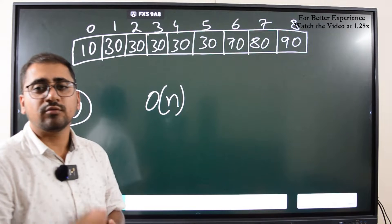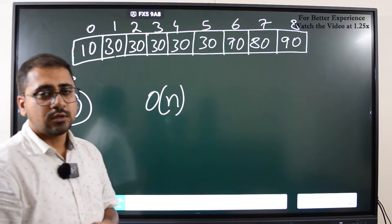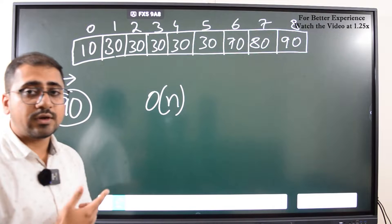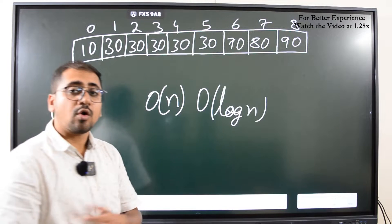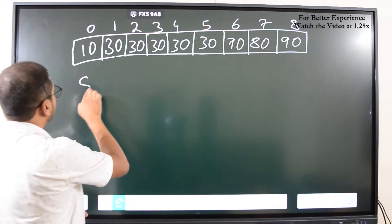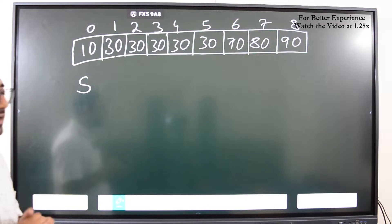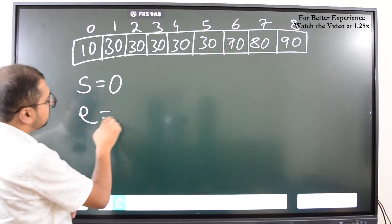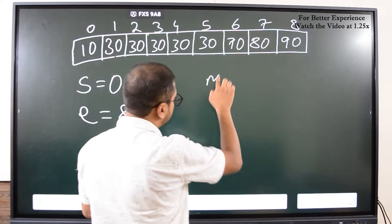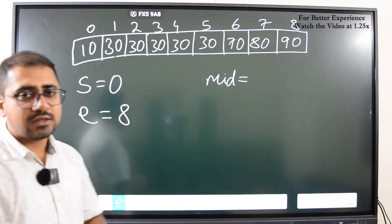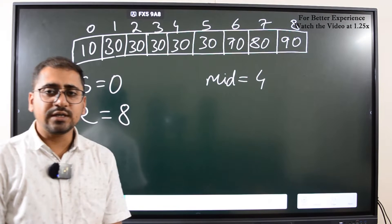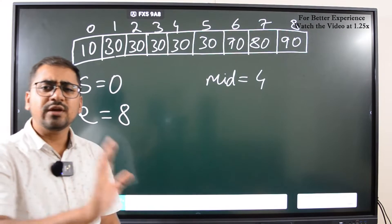Can we do it in a better way with fewer operations? Yes — using binary search, the time complexity reduces to O(log n). So how do we apply binary search here? We have a start index initialized to 0 and an end index at 8. We find the mid element: (0+8)/2 = 4. We check the element at index 4 — it is 30.